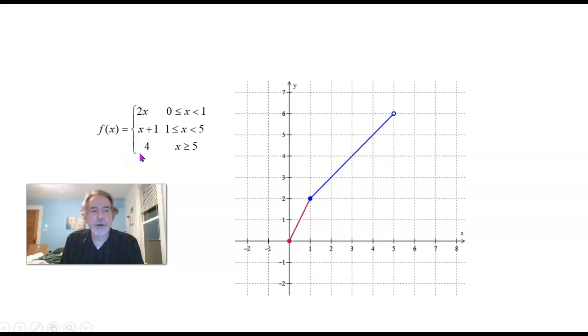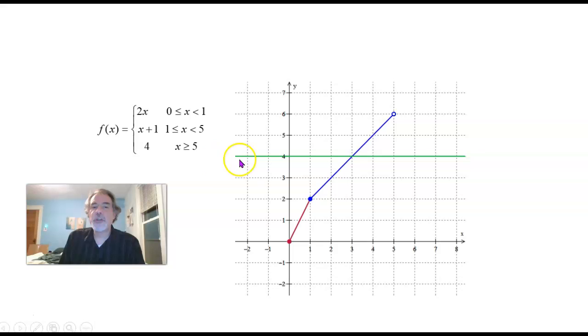Now what about the last part? For f of X to equal 4, that would just be a horizontal line going right straight across where all the Y coordinates are just 4. And we don't have all of that line. We really just have the part of it where the X's are greater than or equal to 5. So we don't have the part over here where X coordinates are less than 5. We only have the X coordinates that are 5 or more. So there's the graph.